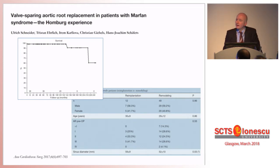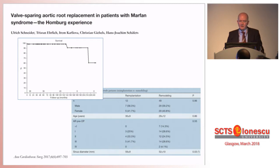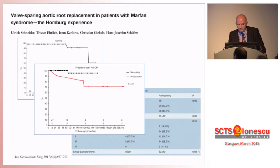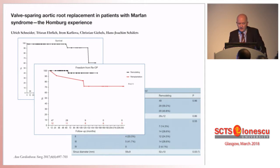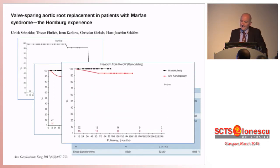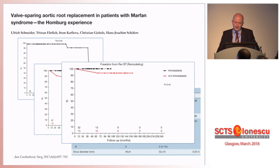Of course, there are also other results, and not everybody is able to reproduce Tyrone's results with re-implantation. Here we have 60 patients — this paper was just recently published — and actually we have seen worse freedom from re-operation with re-implantation than with remodeling. This could, at least as a trend, be improved further by annuloplasty.